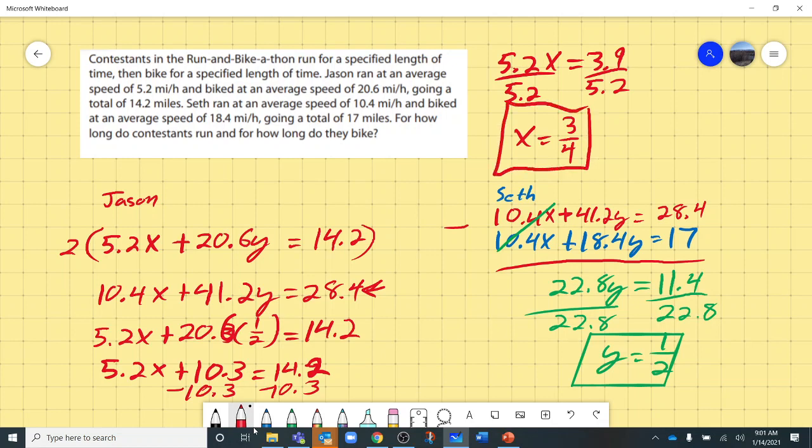So we want to know, do those make sense? So they ran for a certain amount of time. In this case, they ran for three-quarters. What does that mean? And they biked for one-half. What does that mean? So we know that it's a time, an amount of time.